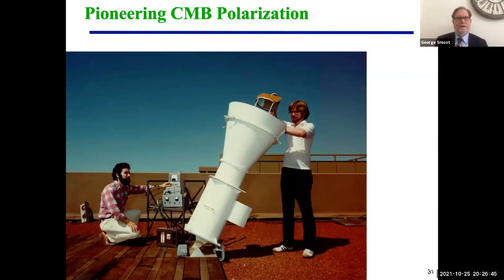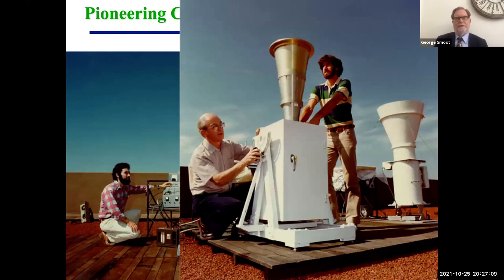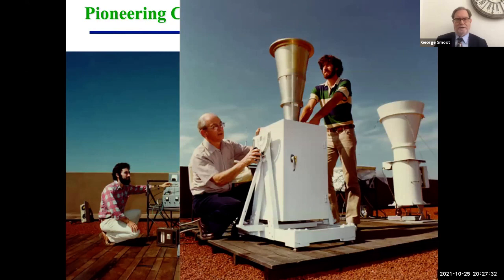At about this same time, we realized we should be measuring CMB polarization. On the left is Phil Lubin, and on the right is me with our calibrator—a polarizer and a blackbody radiation source that we stick out and compare to the dark sky. The person on the left is Hal Daugherty, our master technician designer who made a lot of these things work. This measurement is done at 3 centimeters, and there's another at 3 millimeters.